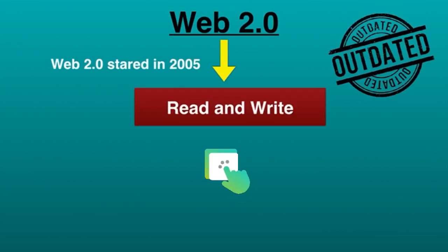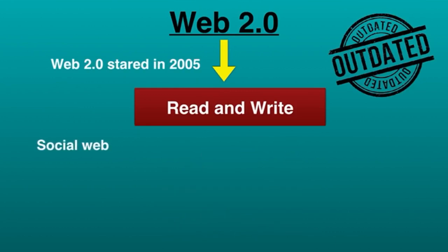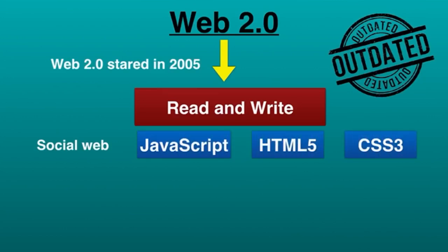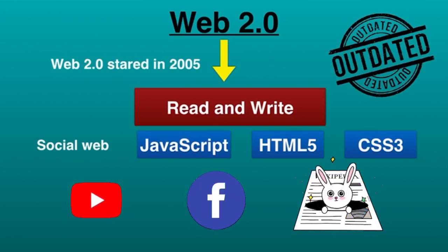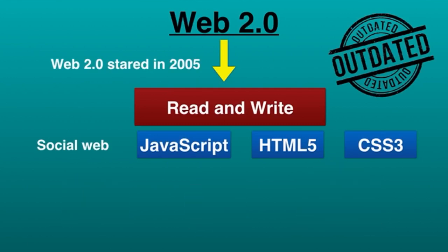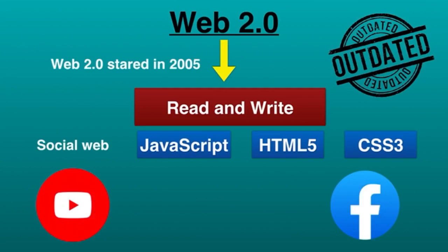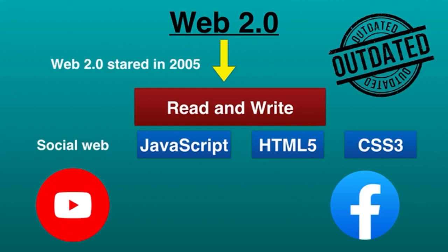It's also called the social web, that made the internet a lot more interactive using JavaScript, HTML5, CSS3, etc. Web 2.0 facilitated tech companies to build interactive web platforms such as YouTube, Facebook, Wikipedia, and many more. These platforms made it possible for both social networks and user-generated content to flourish — a web where data could be distributed and shared between different platforms.